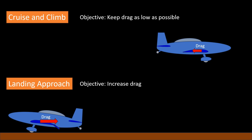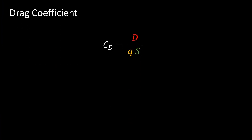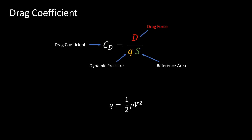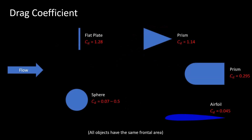To compare the drag forces on various bodies, we use a non-dimensional number called the drag coefficient. The drag coefficient is found by dividing the drag force by the product of dynamic pressure and reference area. The reference area may be different depending on how we are calculating drag. The dynamic pressure is given as half times the product of density and velocity squared. The drag coefficients of some basic shapes are shown here — a lower drag coefficient means the object moves more easily through the fluid with less resistance, while a higher drag coefficient means more resistance and harder movement.